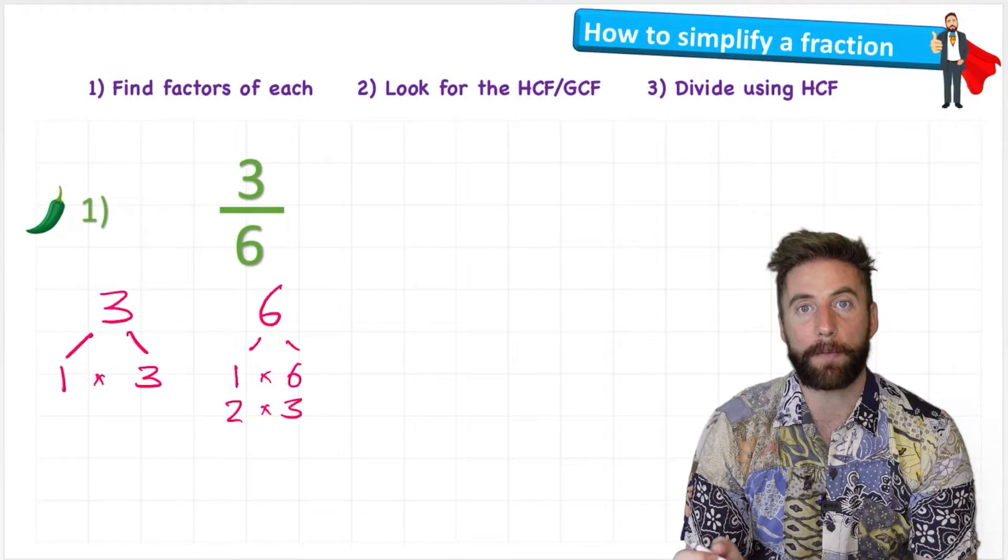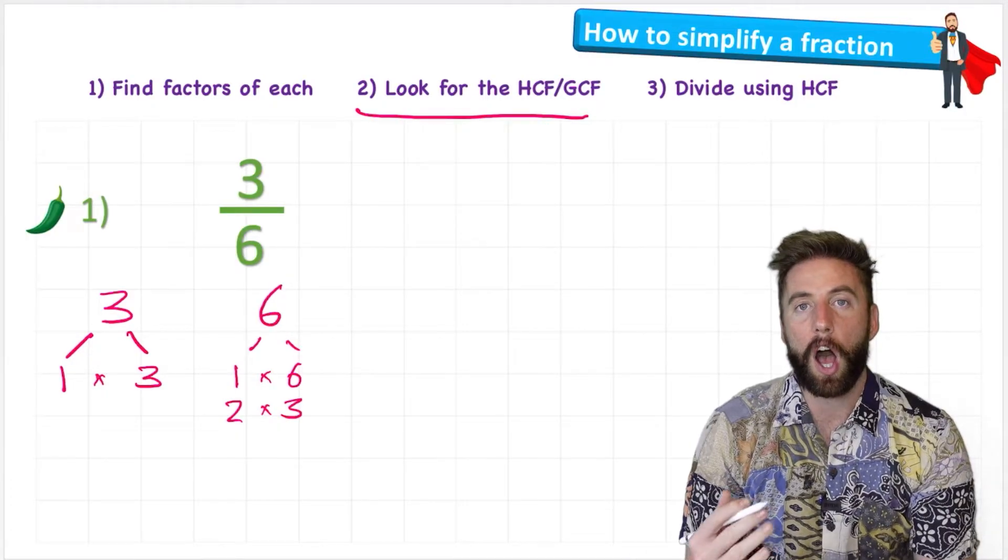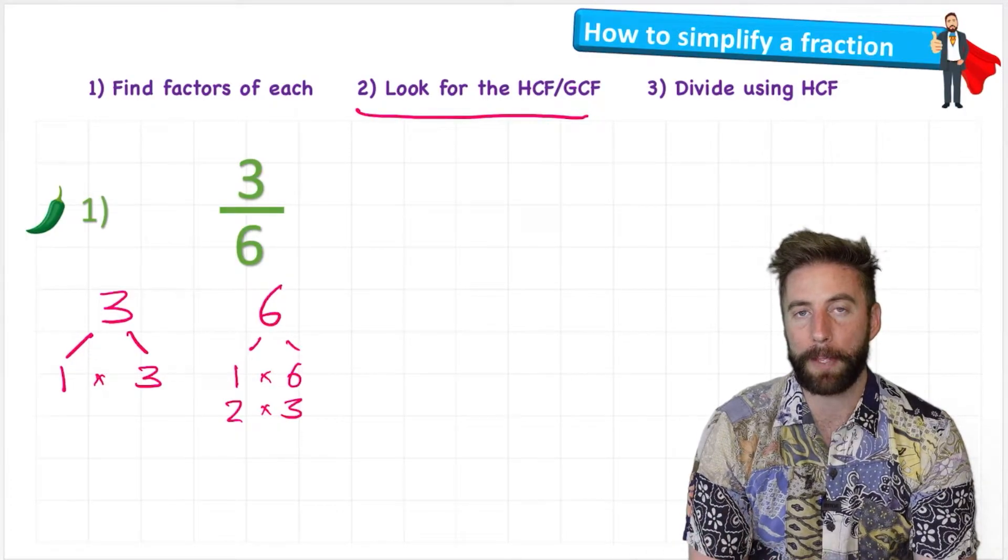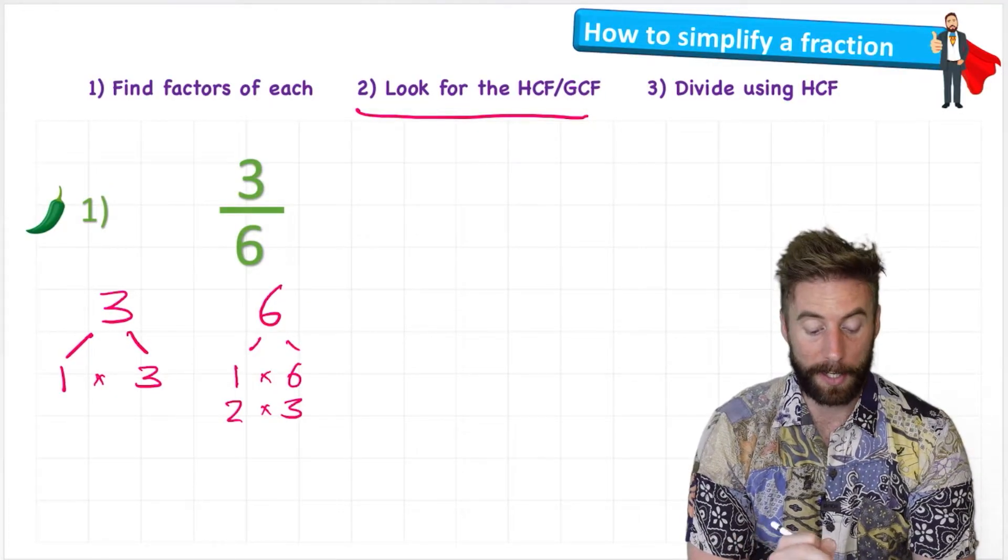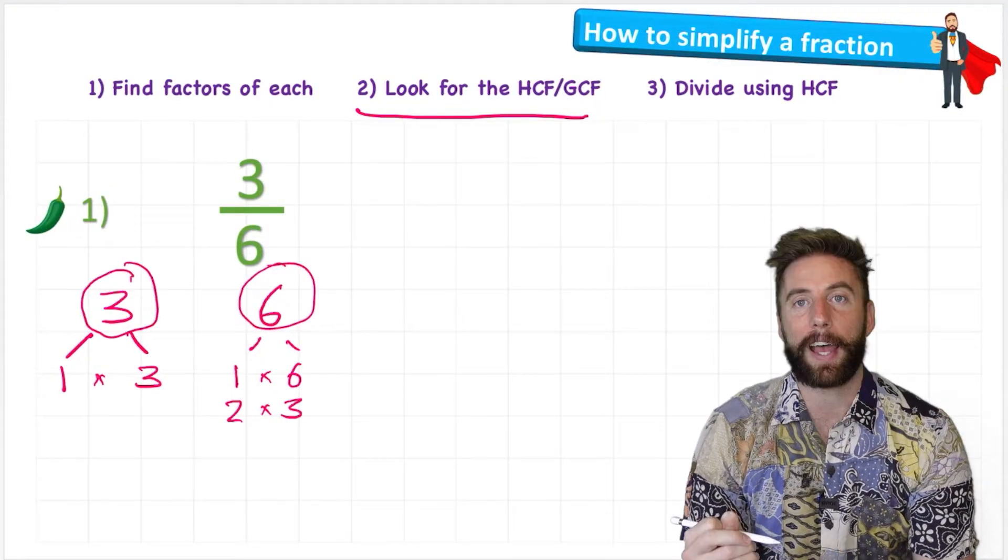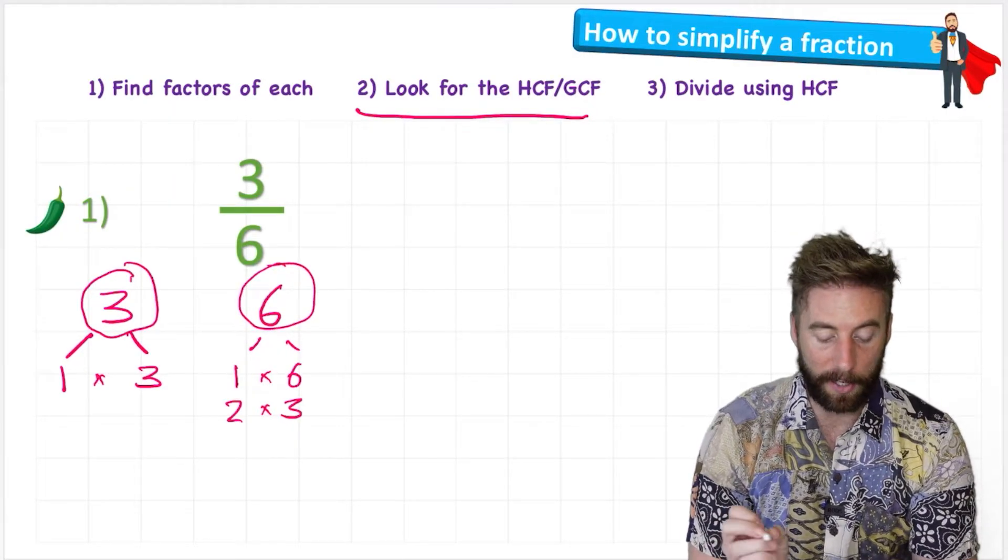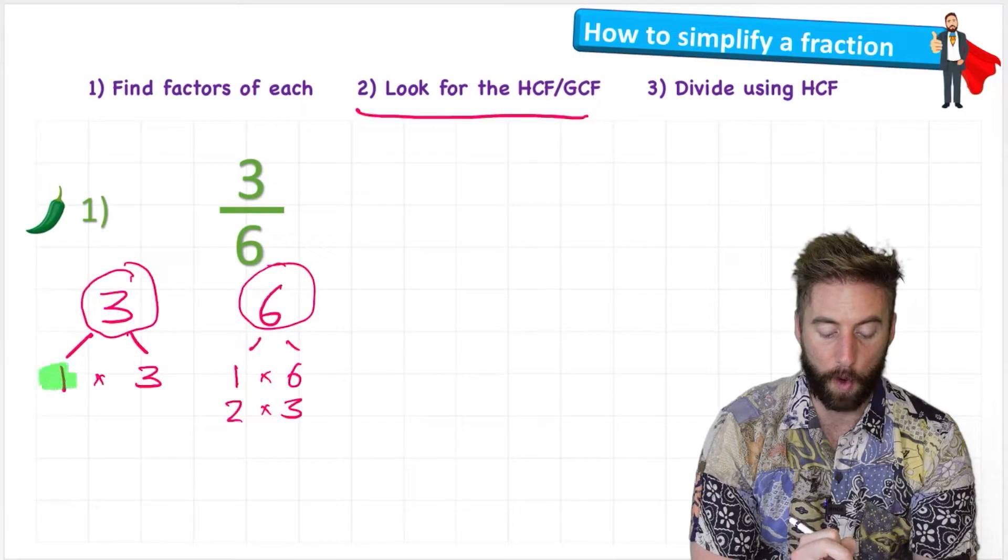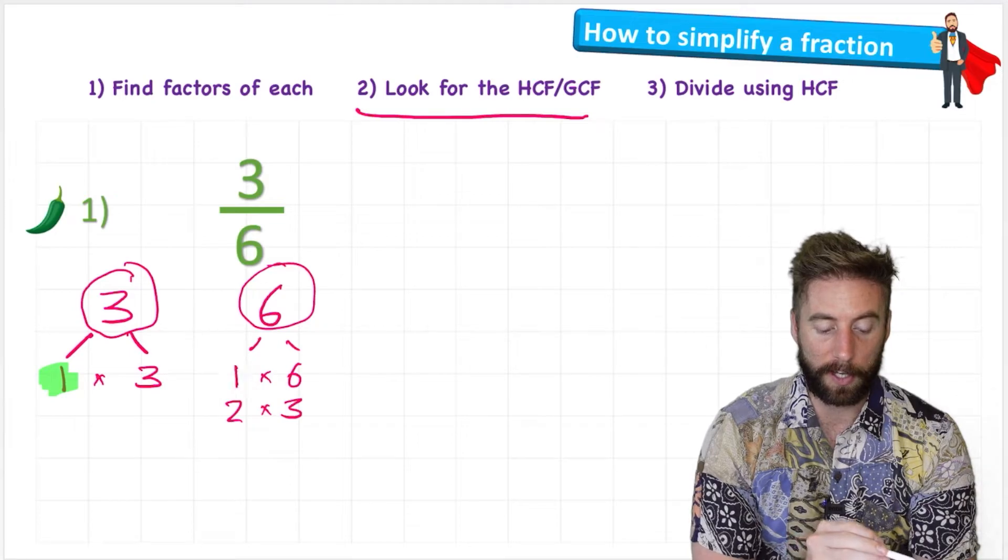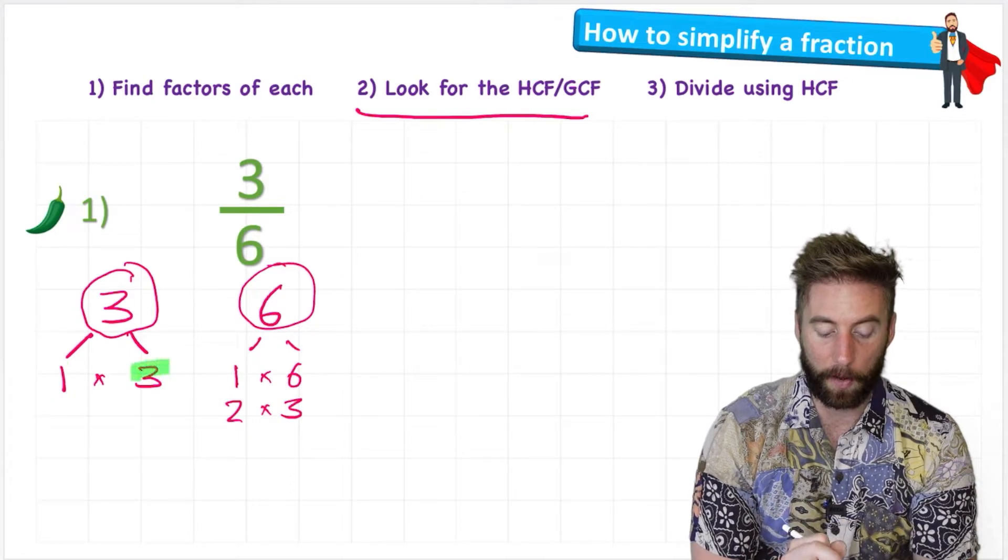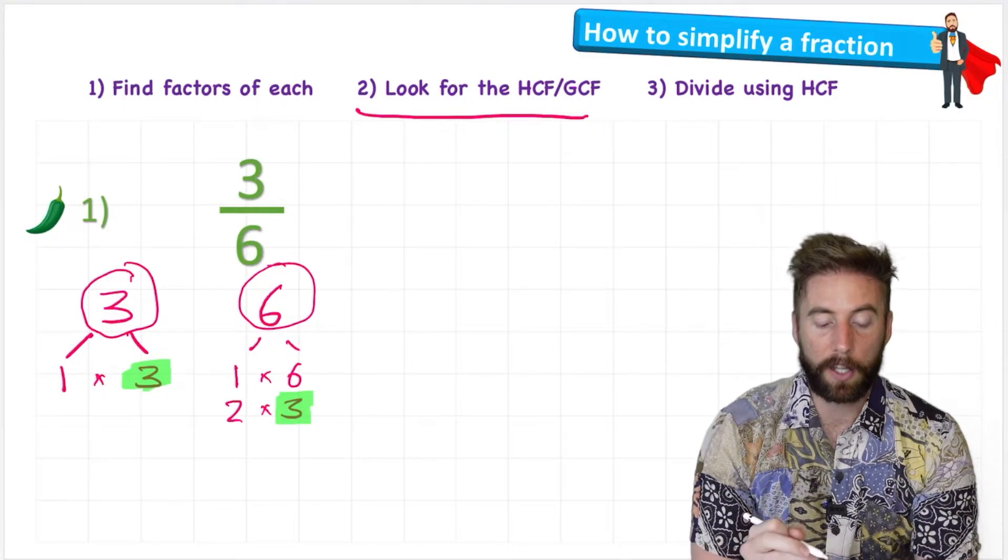Now I'm going to look at step two which says look for the highest common factor. So highest common factor - what does that mean? Well, highest means the greater number. Common means is in both of my numbers. And factor is the factors that we've just made. So I'm going to look for the highest number that's on both of these. Well, I've got a one on both, but that's not the highest value, so that's not what I'm looking for. Here we go, I can see a three, and that's our highest common factor.